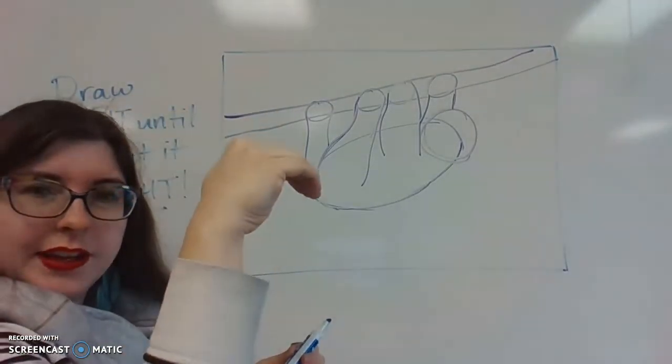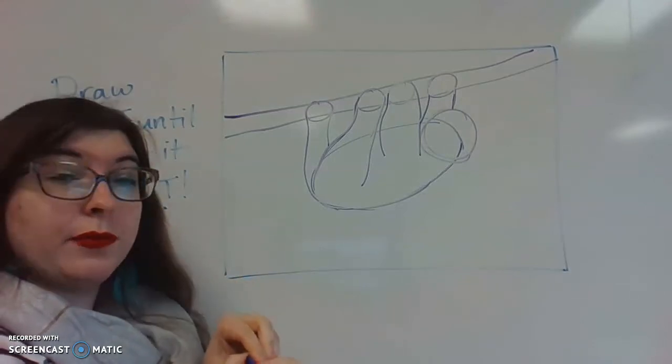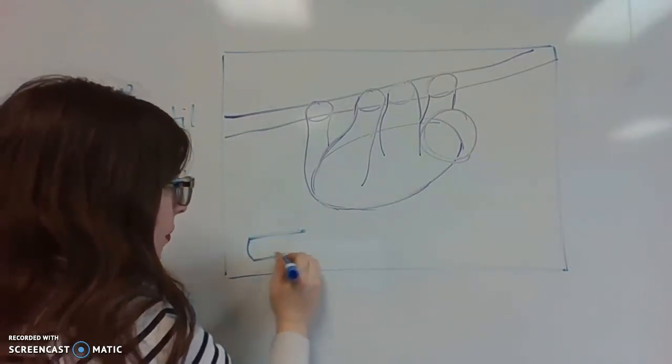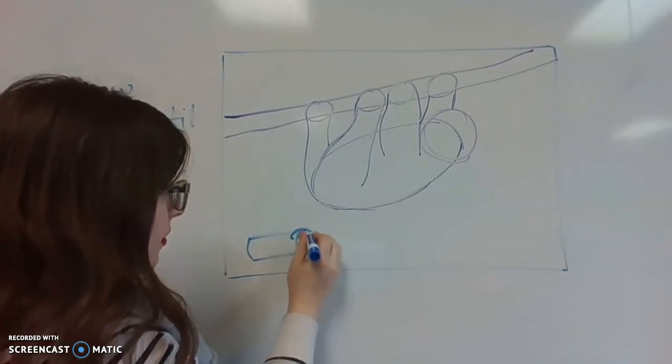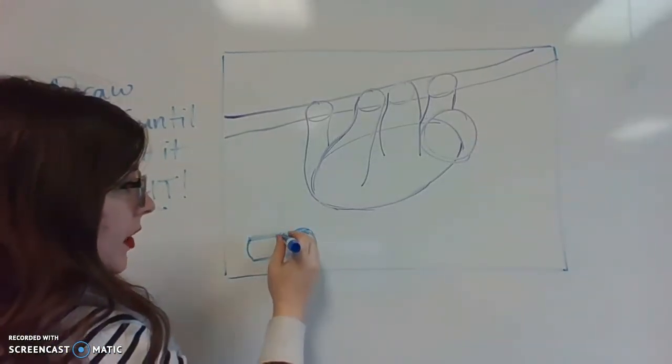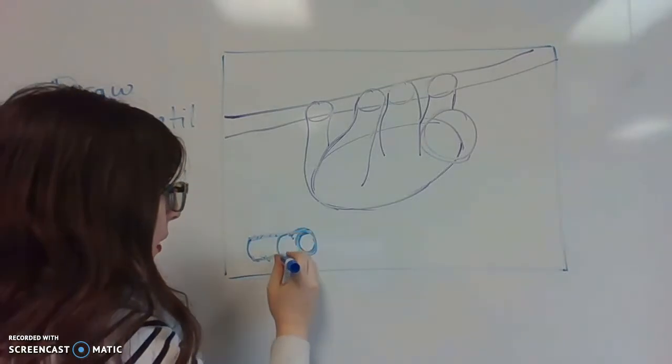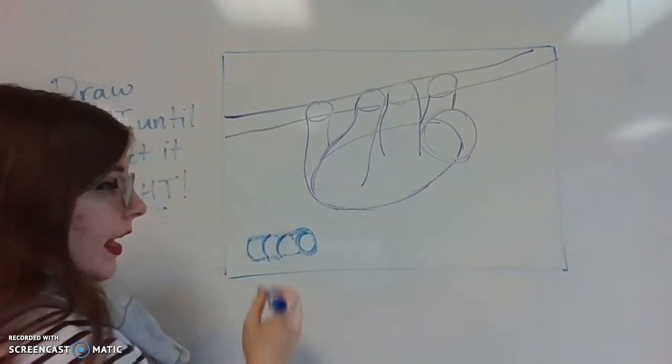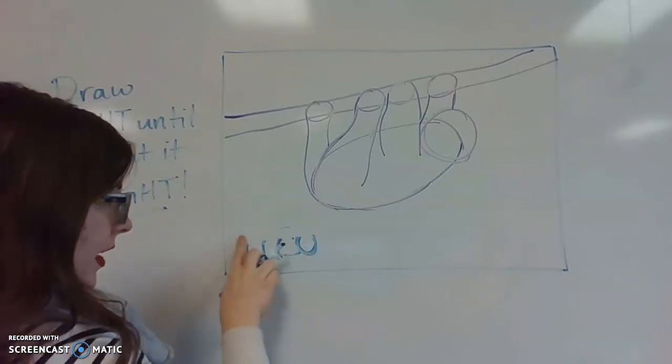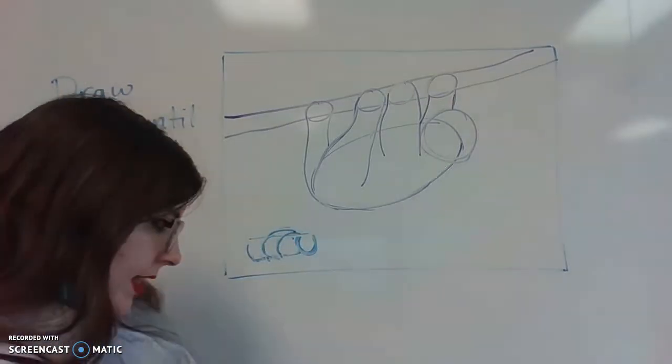Since a sloth is curling around the surface, anytime you draw something curling around a surface you want to think about your geometric forms like a cylinder. Our branch is essentially a cylinder. When you have something wrapping around the cylinder it's going to wrap using these same circle shapes. If I'm drawing my cylinder I would use these round shapes. That round shape comes around the cylinder, and if it were going over the cylinder it would continue in a round shape, that circle shape would just keep going. So that's what we'll be doing as we draw our sloth's arms and three fingers.